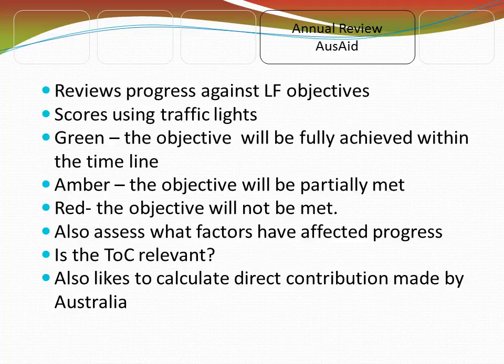AusAID, by contrast, uses the log frame but uses traffic lights. Green means the objective will be fully achieved within the timeline; amber means partially achieved; and red means the objective will not be met. It also looks at what factors have affected progress, whether the theory of change is relevant, and likes to calculate direct contributions made by the Australian Government.